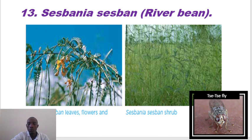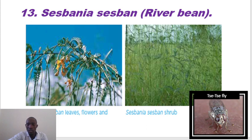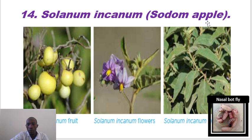The other plant is Sesbania sesban, which we commonly know as the river bean. Sesbania sesban plays various medicinal roles: it helps in treatment of East Coast fever, which is a tick-borne disease common in Uganda. Sesbania sesban also prevents or controls biting flies like tsetse flies, which are biological vectors of trypanosomiasis — which is zoonotic and can affect humans as sleeping sickness or animals as nagana. It also controls nasal bots, which affect mainly the nostrils of animals, causing irritation.